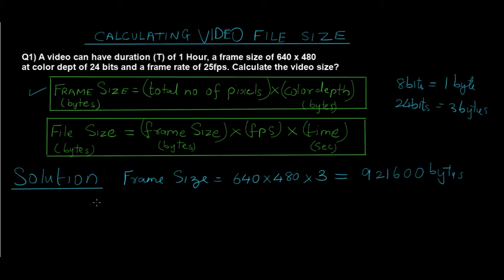Now we have to calculate the file size. The file size is equal to frame size, which we just calculated, so that would be 921,600 into FPS. Now we've been given the FPS as 25. The time has to be in seconds, so notice that the time is given in hours.